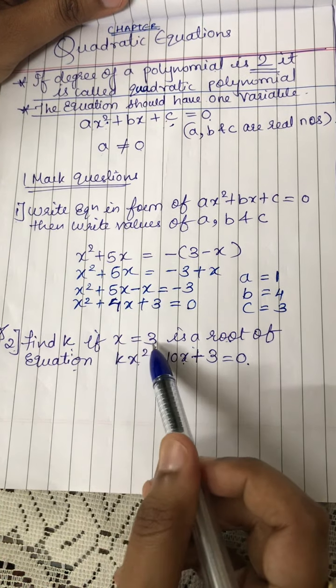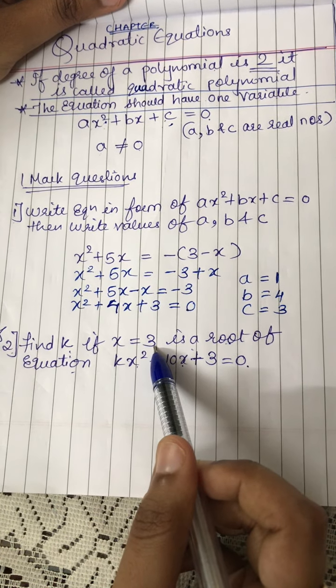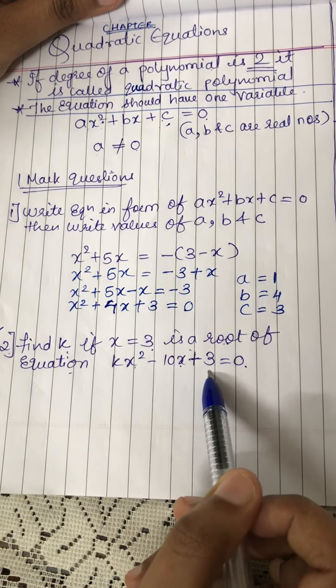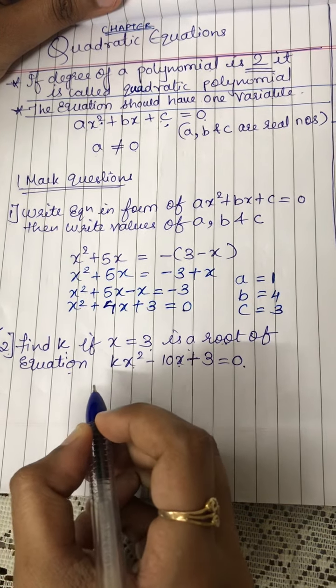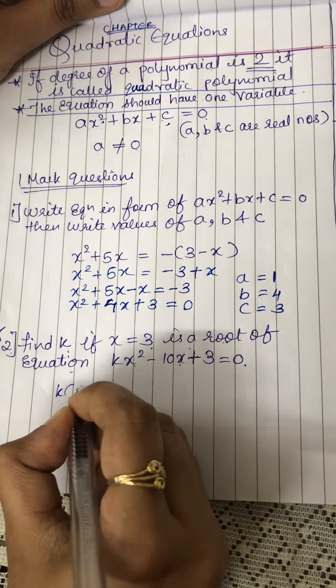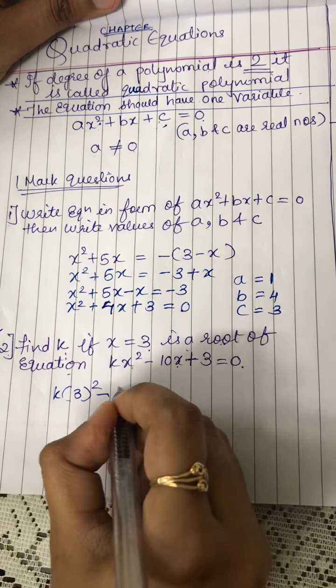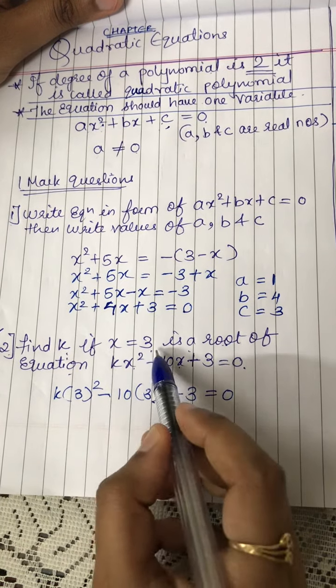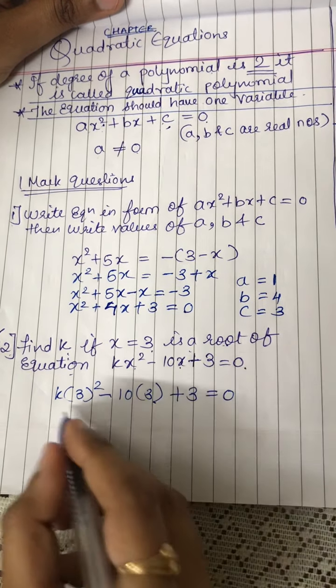Here, the root is x is equal to 3. And to find the value of k, this root x is equal to 3 should satisfy the equation. So by substituting the value of x, you will get k times 3 square minus 10 into 3 plus 3 is equal to 0. Because x is equal to 3 is the root of the equation.